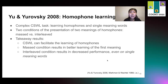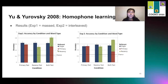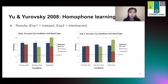Some takeaway results from this experimental study are that cross-situational word learning can facilitate the learning of homophones. The mass condition results in better learning of the first meaning over the second, so there's a strong primacy effect, and the interleaved condition results in decreased performance even on single-meaning words. The first meaning is preferred over the second in experiment one, which is the mass condition, and in experiment two, performance drops overall, including for the single-meaning words shown in the blue bar. Regarding Pursuit, it does not quite have the capability to learn two meanings, and when we run it on the experiment, we see that it never adds any of the homophones' meanings to its lexicon. While the patterns are captured, the association values are quite low, indicating a great deal of uncertainty.